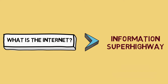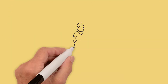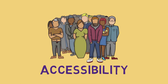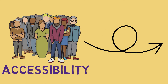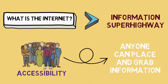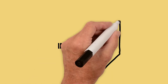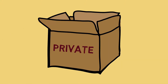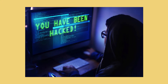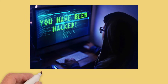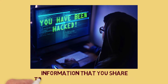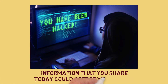First things first, let us define what the internet is. The internet is also known as the information superhighway. From the word superhighway, it means that anyone has access to it — anyone can place information and can grab information. So any information, even things that you set privately, can be accessed one way or another. This is why the threat of cybercrime is very real.